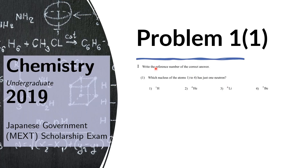Problem 1.1: Which nucleus of the atoms 1 to 4 has just one neutron? To answer this, we need to remember the number of protons in each of these elements, which is the atomic number of each element.